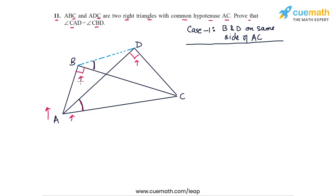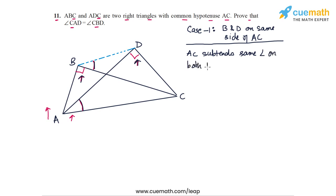To show ABDC is cyclic, we note that the hypotenuse AC subtends the same angle at both B and D. Both of these angles are 90 degrees, so AC subtends equal angles at B and D.